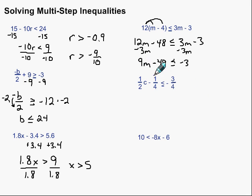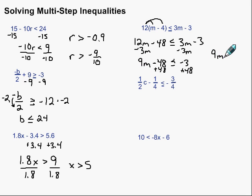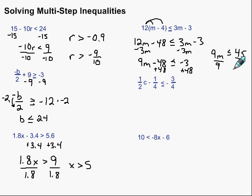Now we're going to add 48 on both sides. So we have 9m is less than or equal to negative 3 plus 48, which gives us 45. Then, finally, our last step to get m all by itself is to divide by 9. M is less than or equal to 5.